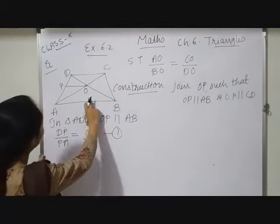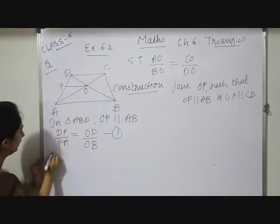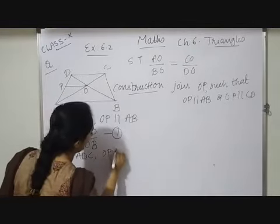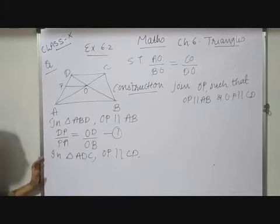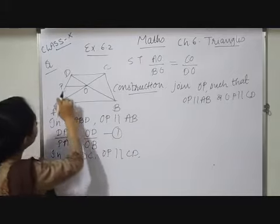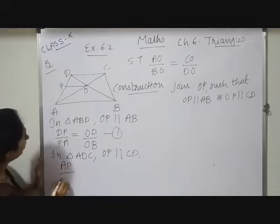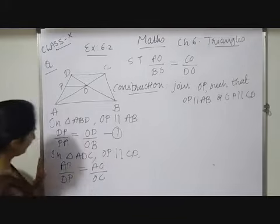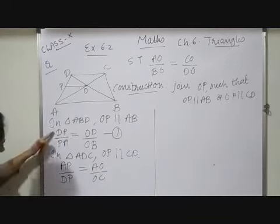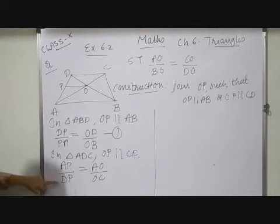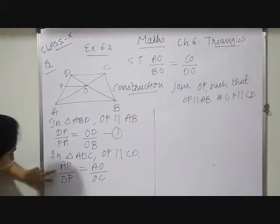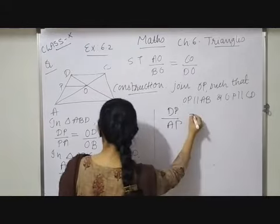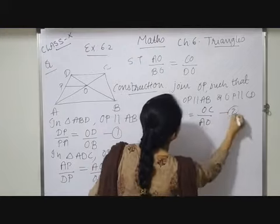Second: let me take triangle ADC. In triangle ADC, OP parallel CD. Based on the Basic Proportionality Theorem, I can write: AP upon DP equals AO upon OC. Taking reciprocals: DP upon AP equals OC upon AO. Let this be equation number 2.